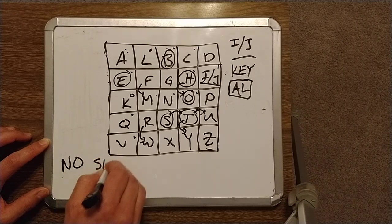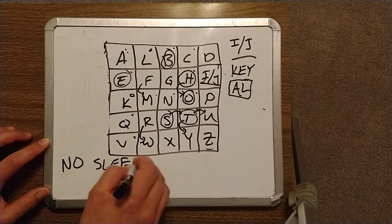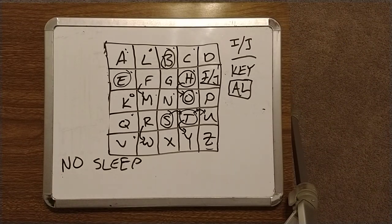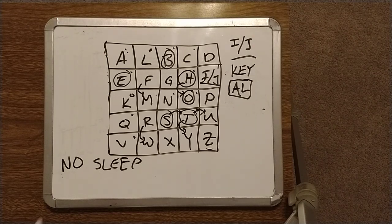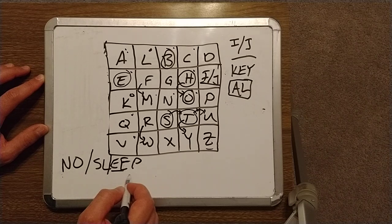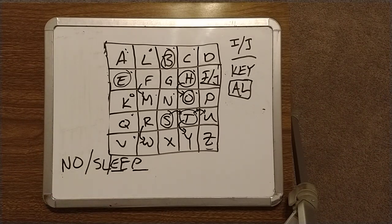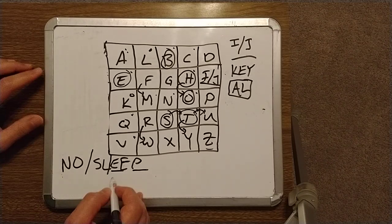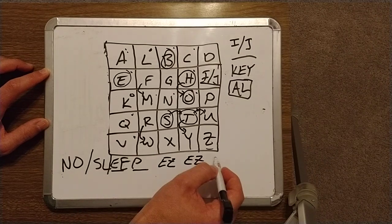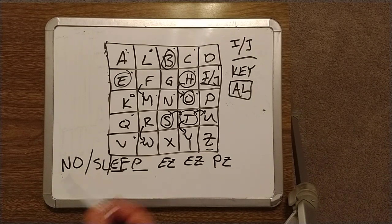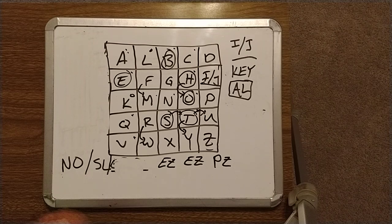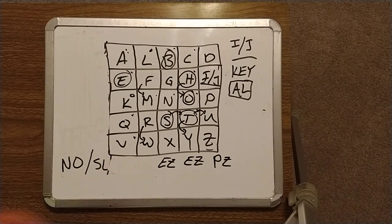So we are going to go ahead and we are going to encrypt the two word phrase no sleep. No sleep breaks into a series of digraphs, N-O-S-L. We need to split up the E-E and we need to create a placeholder because we end with an odd number of letters. So for the E-E, we will create E-Z, E-Z, and then for the final letter P, that's all by itself, it will become P-Z. So no sleep becomes the digraph N-O-S-L-E-Z-E-Z-P-Z.